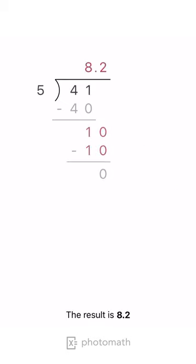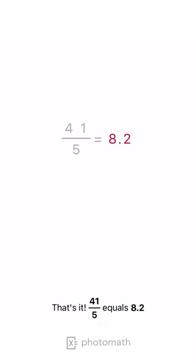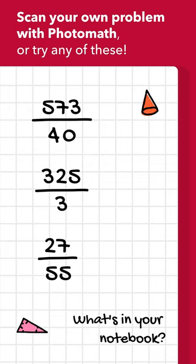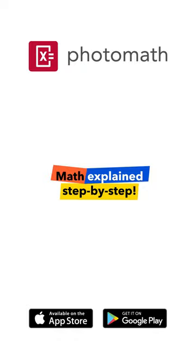The result is 8.2. That's it. 41 fifths equals 8.2.